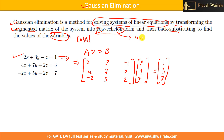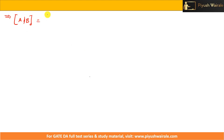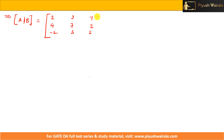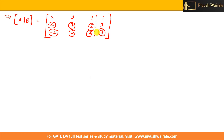Row echelon form means converting into an upper triangular matrix. We need to convert all the elements below the main diagonal to 0 — this element, then this one, and so on. That is essentially the row echelon form.